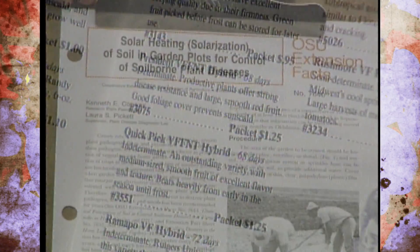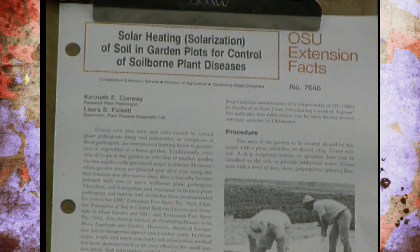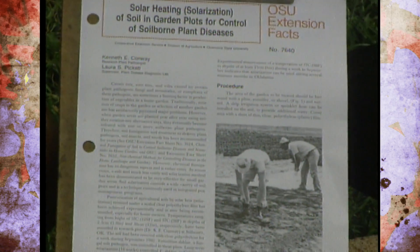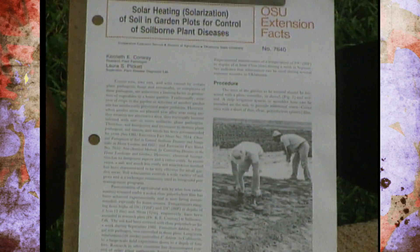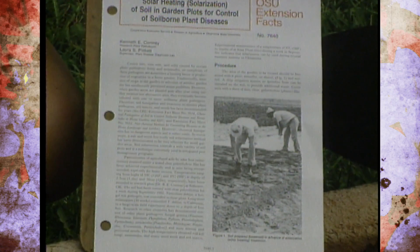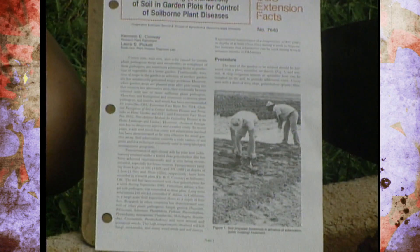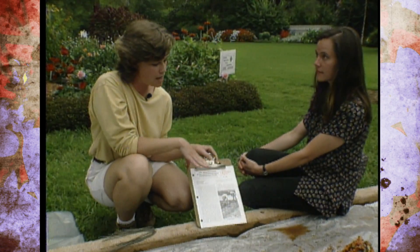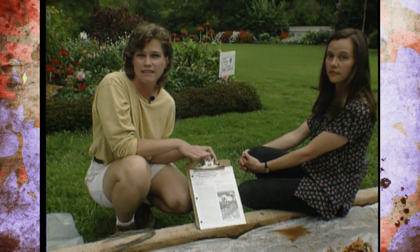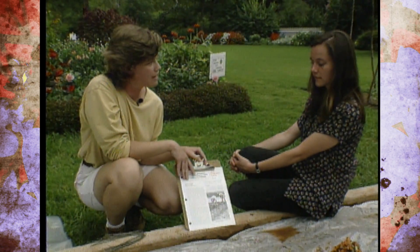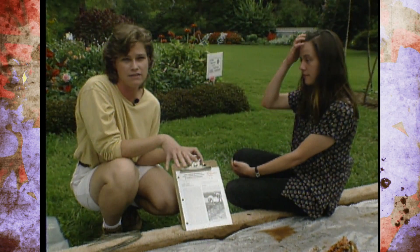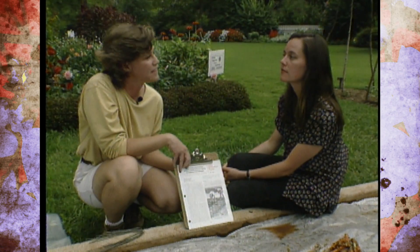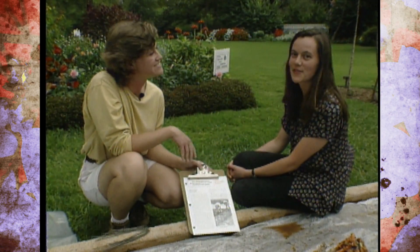If people want to do this at home, there's actually a fact sheet that they can get at their local county office, and it tells all about how to solarize the soil and goes through all the steps. So if you have this problem in your garden, you can go ahead and get this at your county office and start working on getting rid of your nematode problem. Thanks for coming out and talking to us today. You're very welcome.